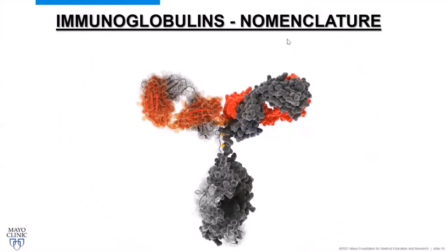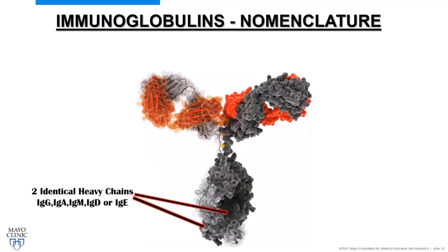To get everybody on the same page, here's our central character: immunoglobulins, also known as antibodies. These immunoglobulins are about 150,000 daltons and consist of four proteins — two heavy chains, shown here in gray and dark black — and this is the part that defines the isotype: whether it's an IgG, IgA, IgM, IgD, or IgE.